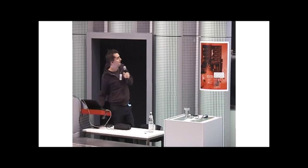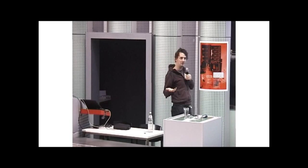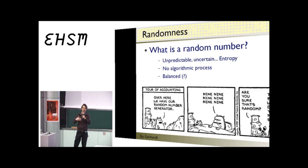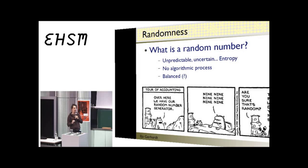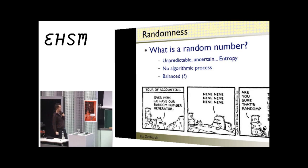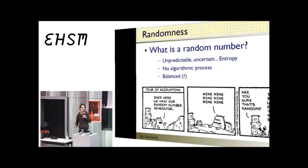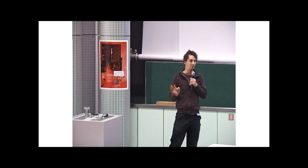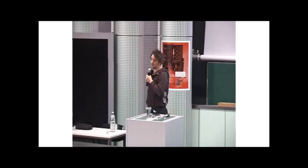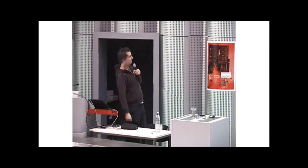What is a random number anyway? First of all, it's something intuitively known but fundamentally unpredictable — you cannot say what the next number will be. The main source of this unpredictability is so-called entropy, the information resource in the system. A random number has no algorithmic process. And is a random number balanced? If I toss a coin, do I get the same number of heads and tails, or can it be unbalanced?